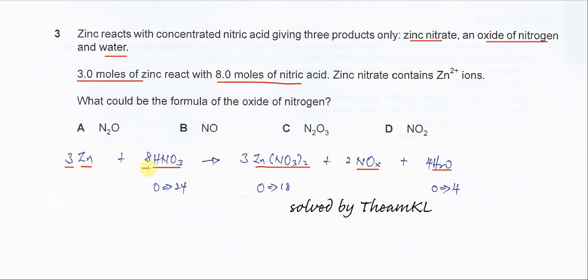After that we balance. The first thing that you need to balance of course is the zinc. So 3 zinc here means you have to put 3 here. After that you can balance the nitrogen.